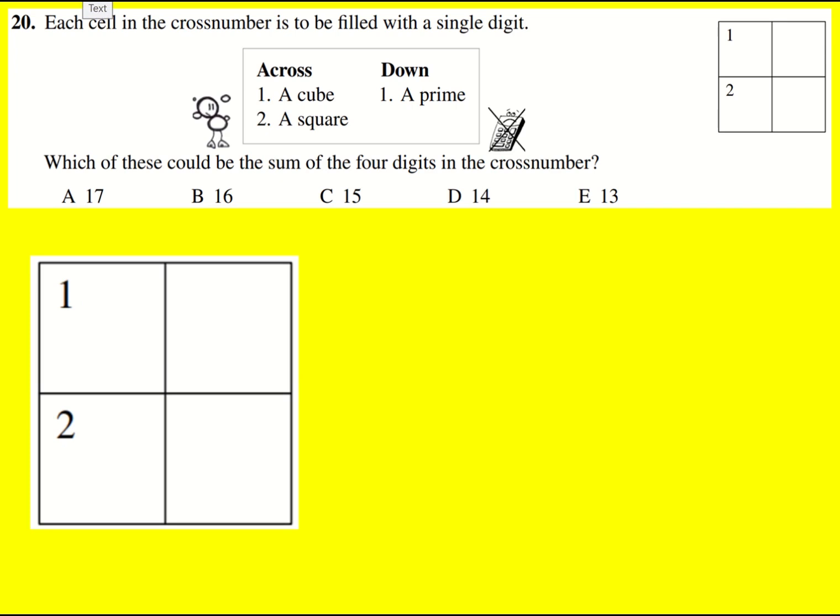We need to work systematically through this, starting with the cubes because there's not many two-digit cubes. In fact, there's only two: two cubed is 8, three cubed is 27, four cubed is 64. These are worth knowing for math challenges. Five cubed is 125, so these are the only options.